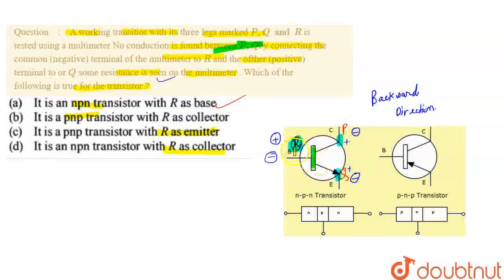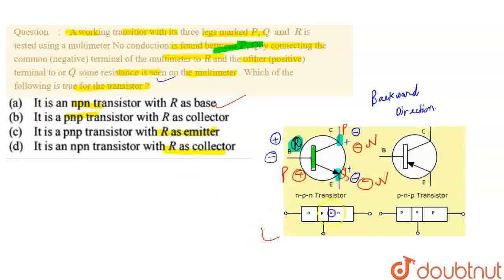So finally, R is the base. Negative terminal connected to R means the base side is N-type. P and Q connected to positive means they are on the positive side, which means N — P — N. So this is an NPN transistor, and R represents the base.